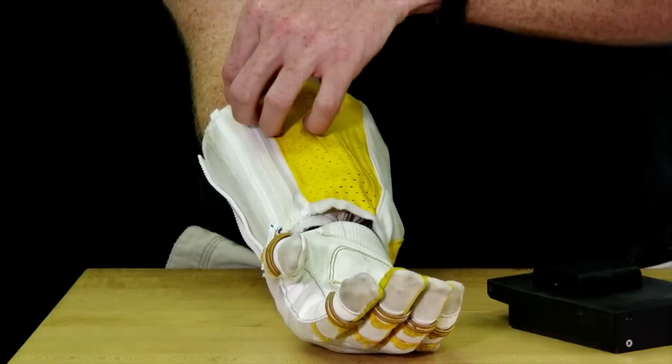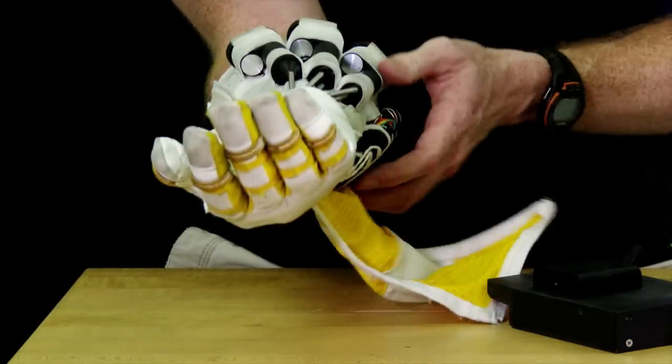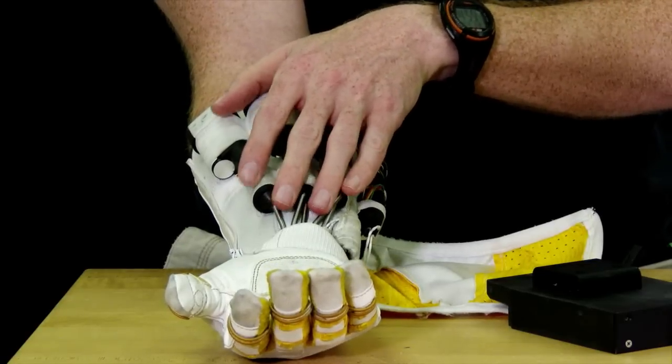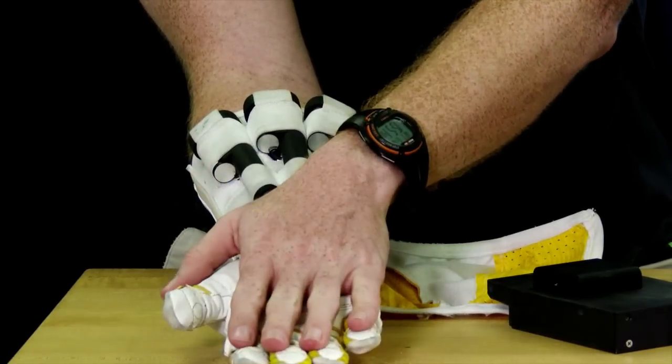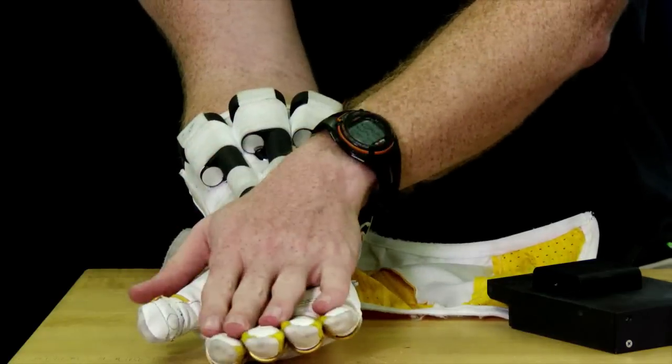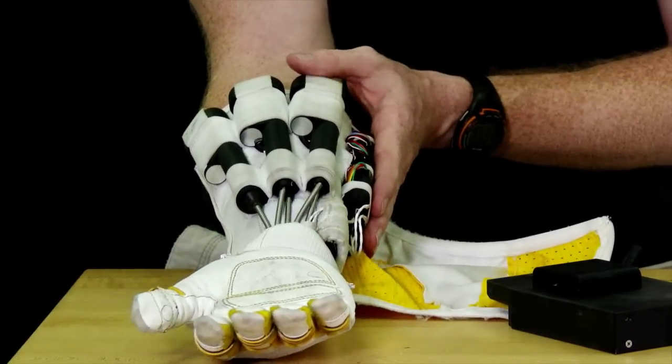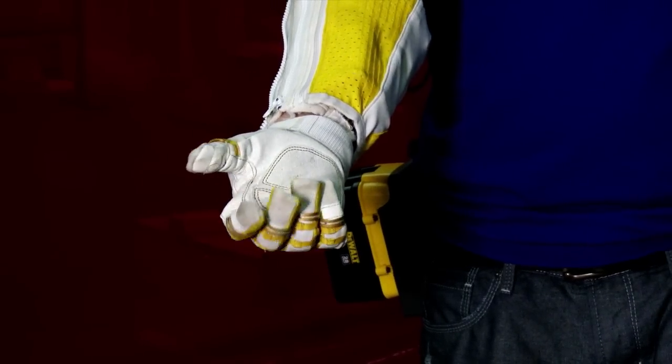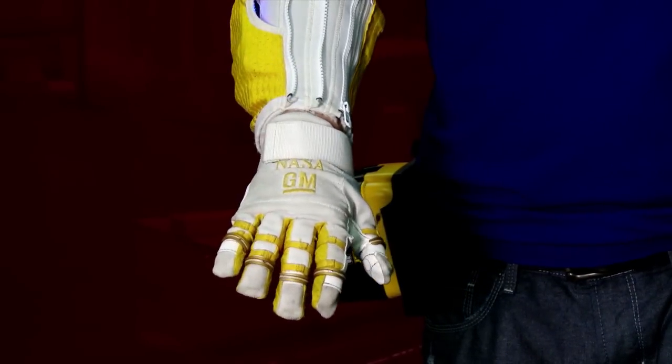Inside the RoboGlove, we have a set of actuators—three of them here—which pull on synthetic tendons that run through the glove out to the fingers. We have a microcontroller and a set of sensors within the fingertips, as well as back here at the microcontroller, that allow the operator to tell the glove when to close, how much to close by, and when to open back up.